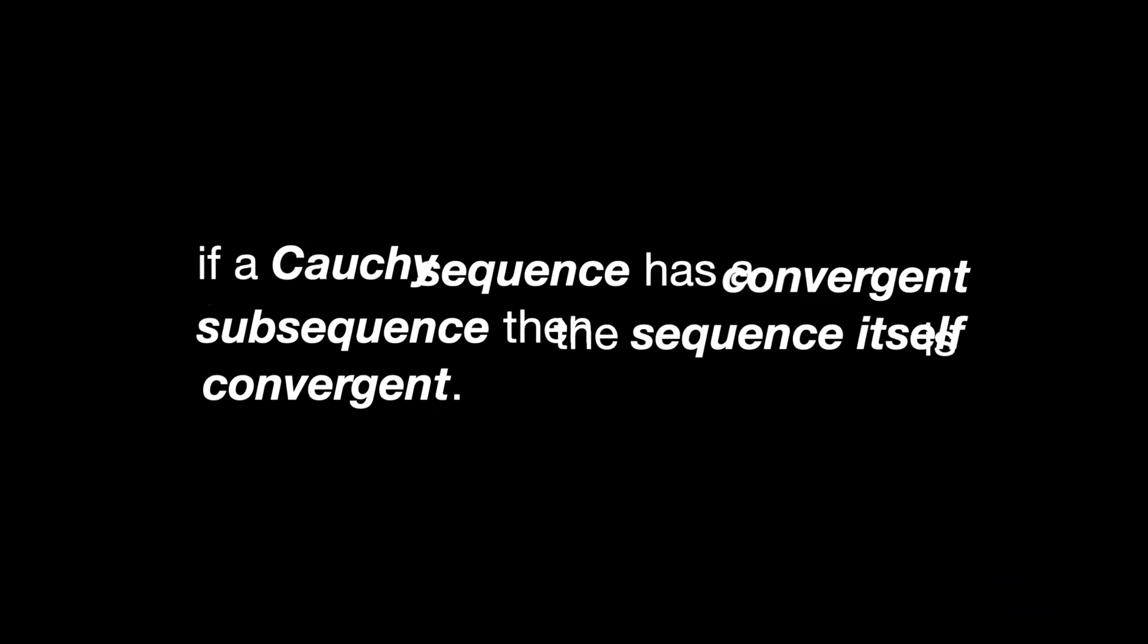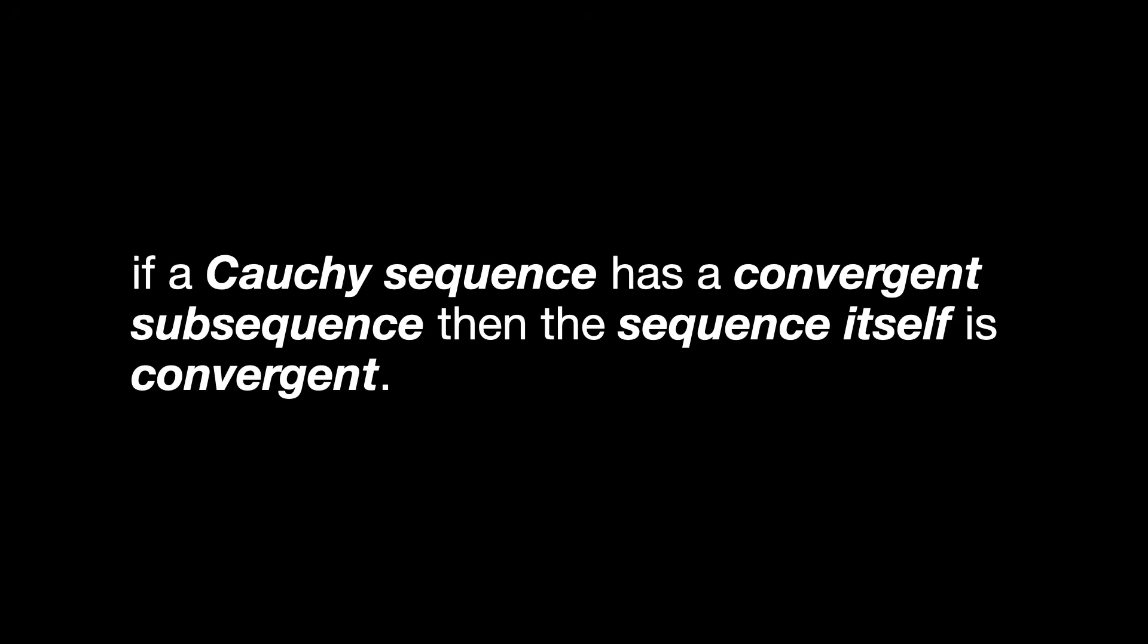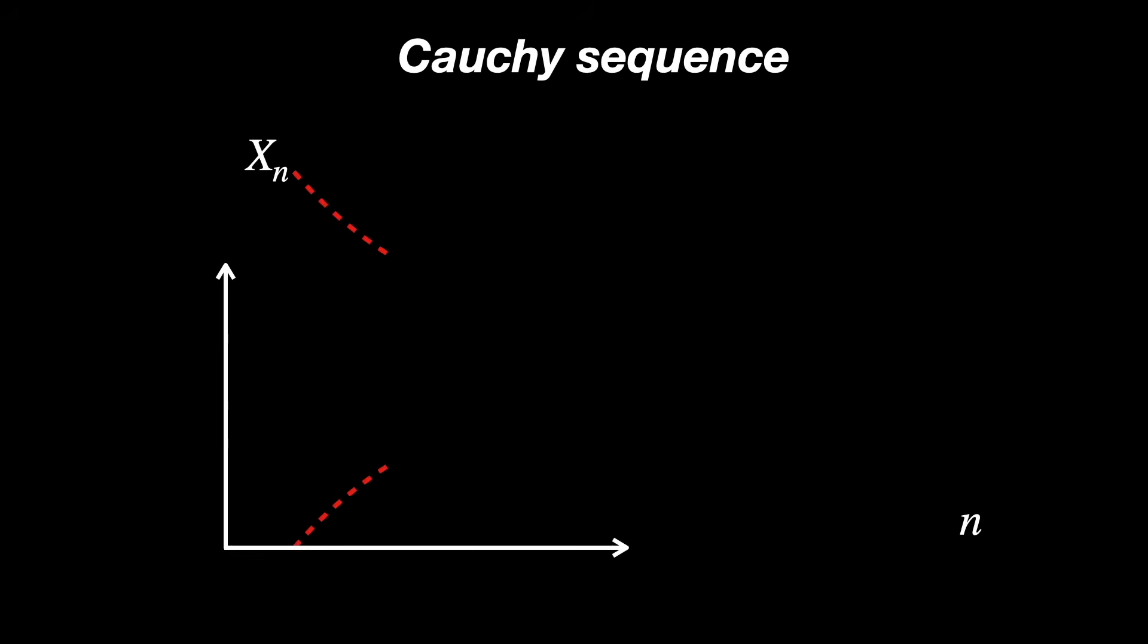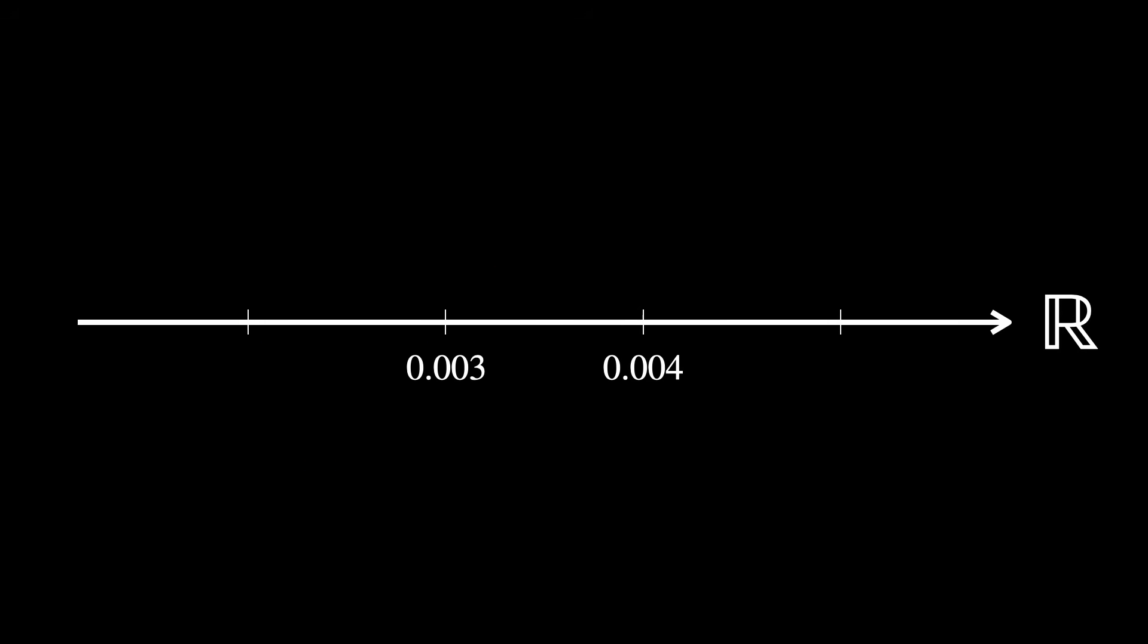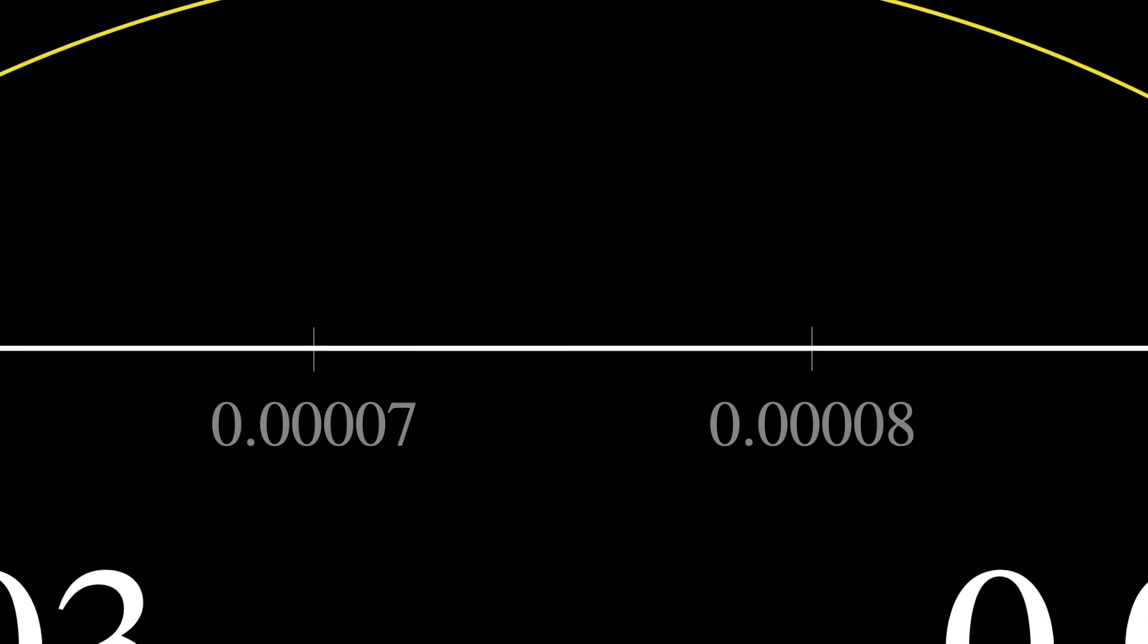Before delving into the technique of the proof, you obviously need to make sure that you know what it is that you're proving. A Cauchy sequence is a sequence where numbers get closer and closer to each other as the sequence goes on. More precisely, no matter how small a distance you choose, there comes a point in the sequence after which all the numbers are within that distance of each other.